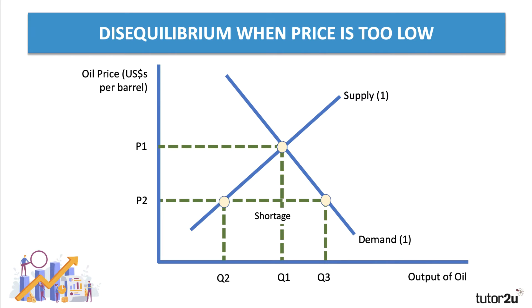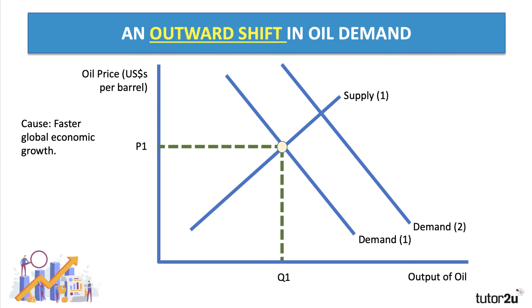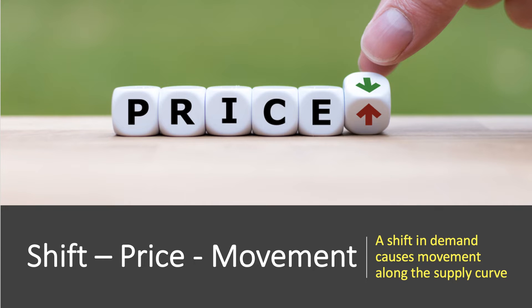Let's take two examples. One would be a shift in demand. I'm going to assume here that the global demand for oil shifts out from D1 to D2 — an outward shift in demand. One proximate cause could be that the world economy starts to grow more quickly, perhaps on the back of a recovery from the pandemic. An outward shift in demand leads to a change in price and a movement along the supply curve.